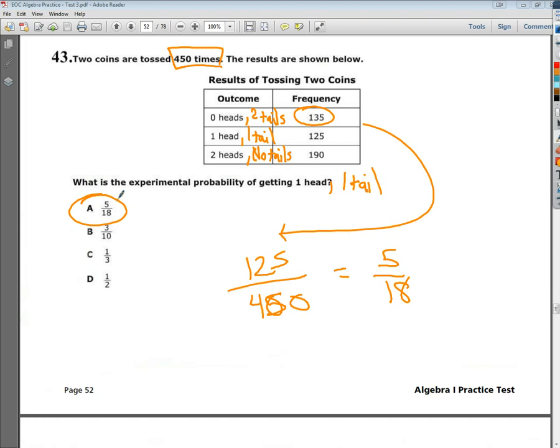So that's it. Make sure when you have an experimental probability component to your question that you put the total on the bottom and then whatever they want to know about, that goes on top of your fraction and then just reduce that thing out or do the division if it's a decimal.